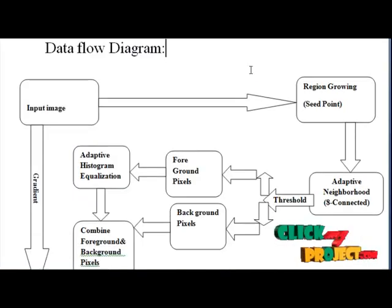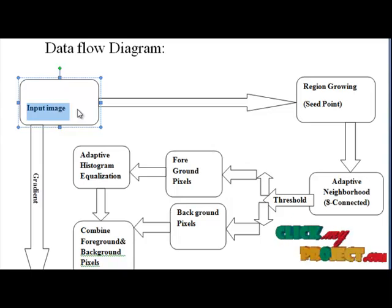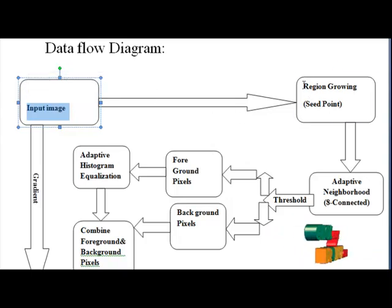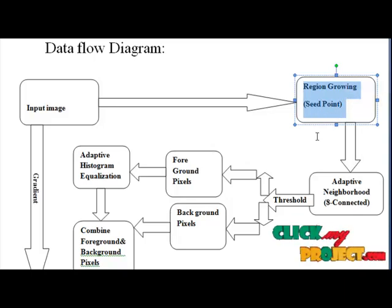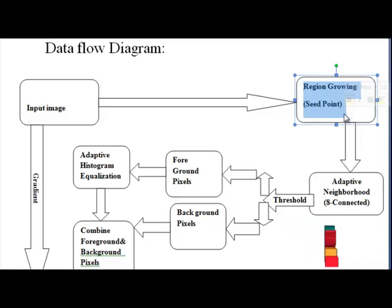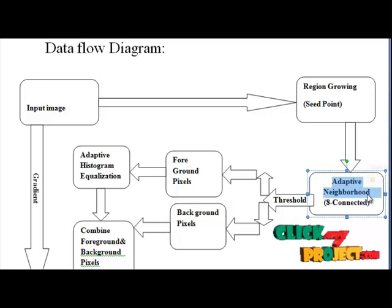Now let us have a view on the data flow diagram. First, we load our input image — any of the medical X-ray images — and then the next step is to select a seed point: select a pixel in the input image and make it a seed point, then add the seed pixels into an empty queue.